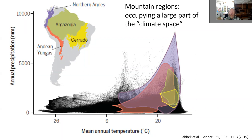Mountains occupy large climate space because of the zonation. When we look at all the locations in the space defined by mean annual temperature and annual precipitation, and map the existing climate space for different ecosystems in South America, we can see that the Amazon is actually very small in terms of variation. Cerrado is even smaller, but the Northern Andes, relatively small in territory, are actually quite huge in climate space. That might be one of the reasons for this extraordinary diversity we have seen previously.